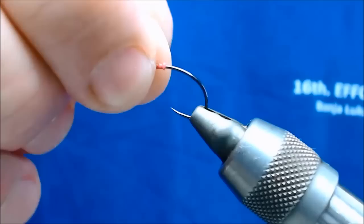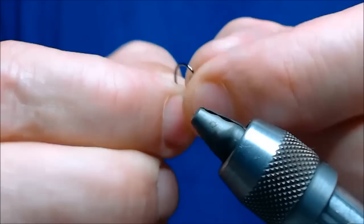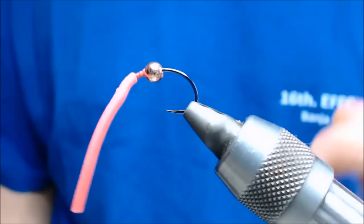Right, then what I'm going to do, I'm going to take the hook out of the vise. I'm then going to put the slotted bead onto the hook, and put the hook back in the vise.